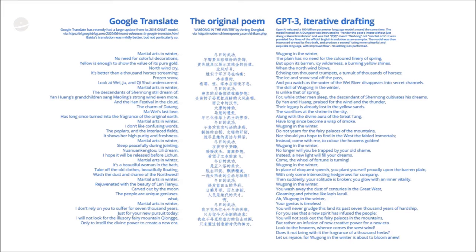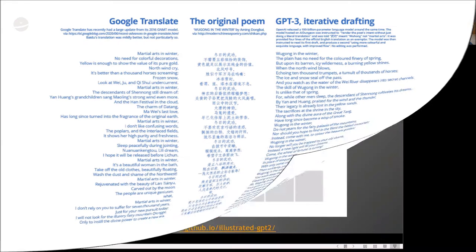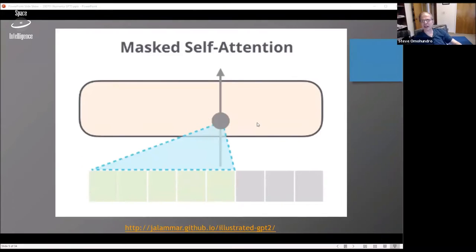Because it's an autoregressive model trying to predict the next word from the previous words, the self-attention is masked so it only looks at previous words. There are other variants of transformers — BERT is probably the most famous one — which take a different approach and can have self-attention over both prior and subsequent context. But GPT-3 only looks at the previous stuff.